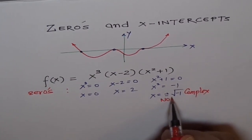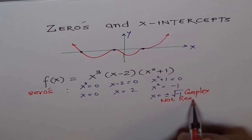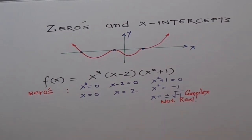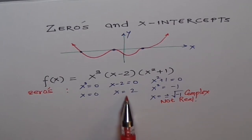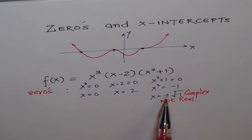So, what do we conclude? We have here two zeros which are real and two which are not real. They are complex.